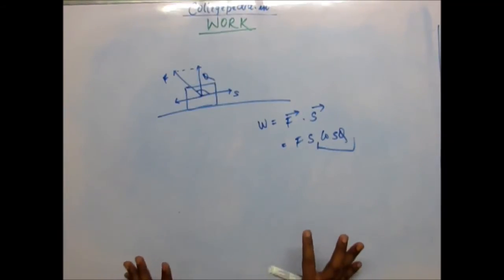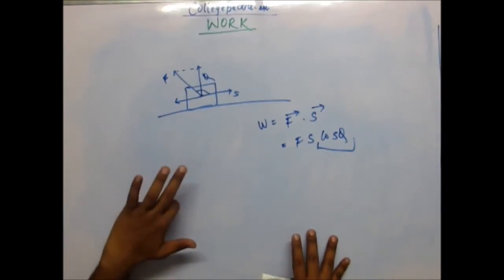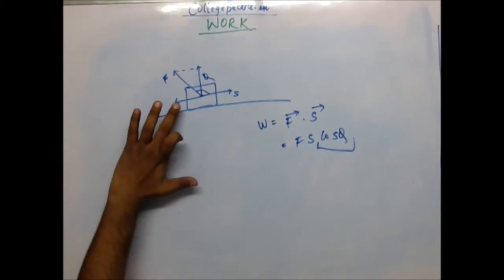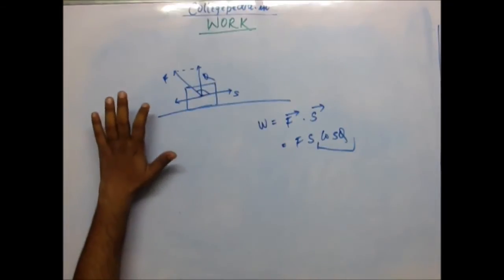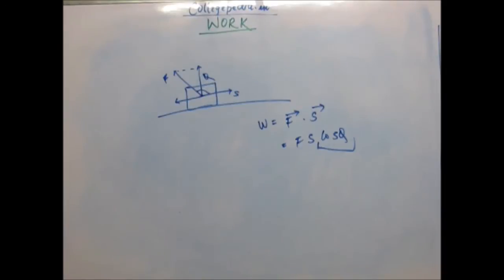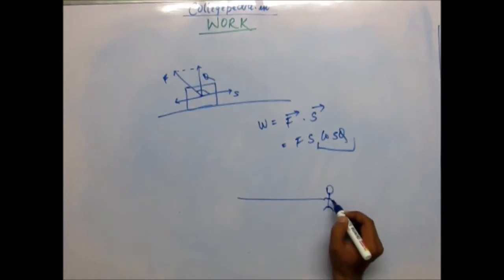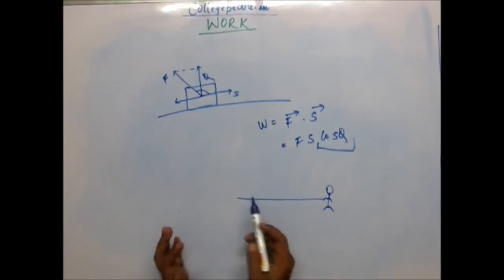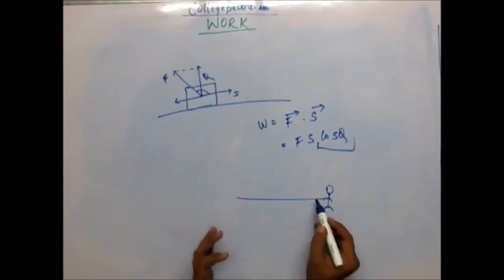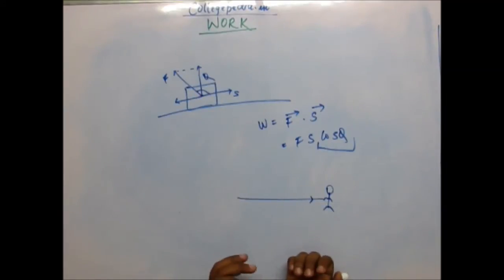The significance is that the work is not actually done by this force; instead, work is done on the agent that is generating this force. For example, suppose you are pulling a rope in a tug of war and you have actually been dragged by the other group.